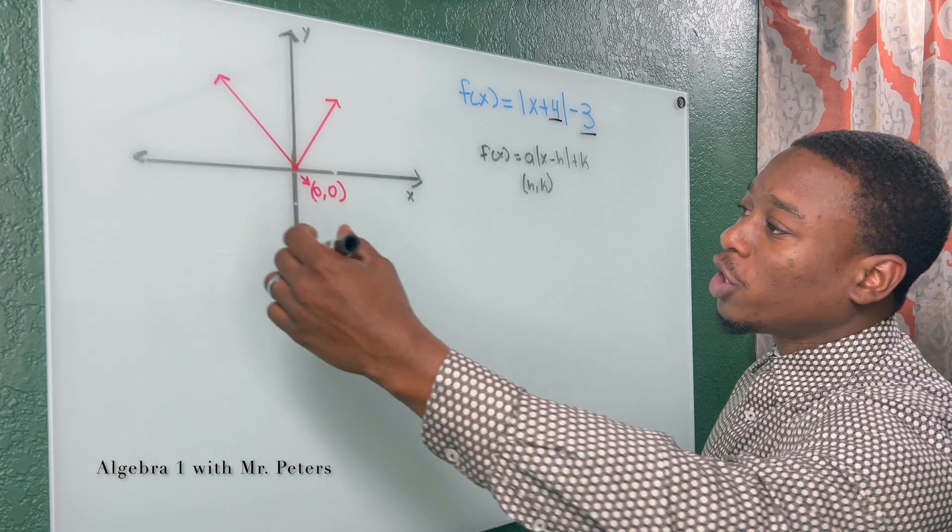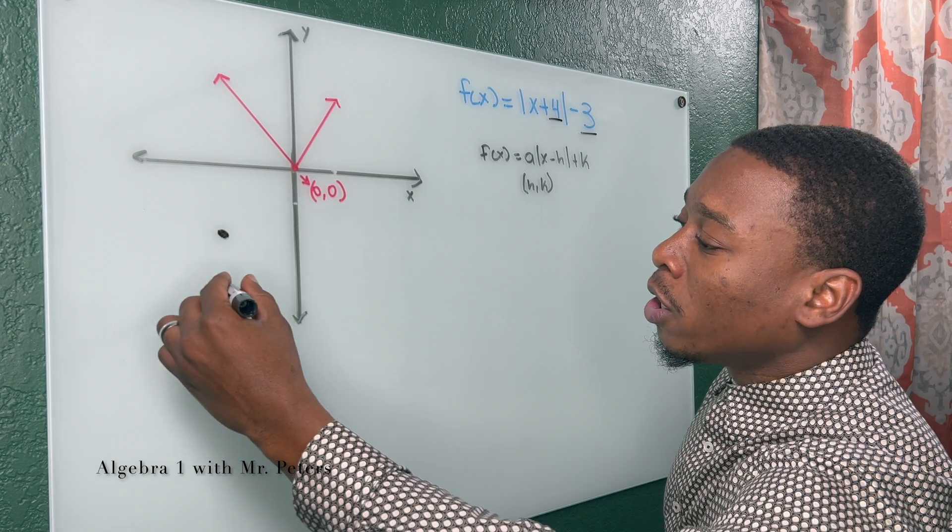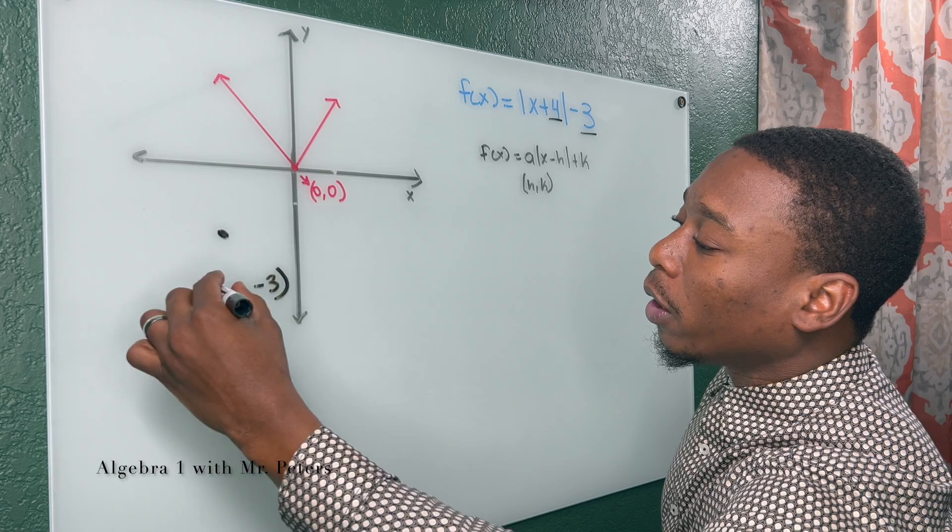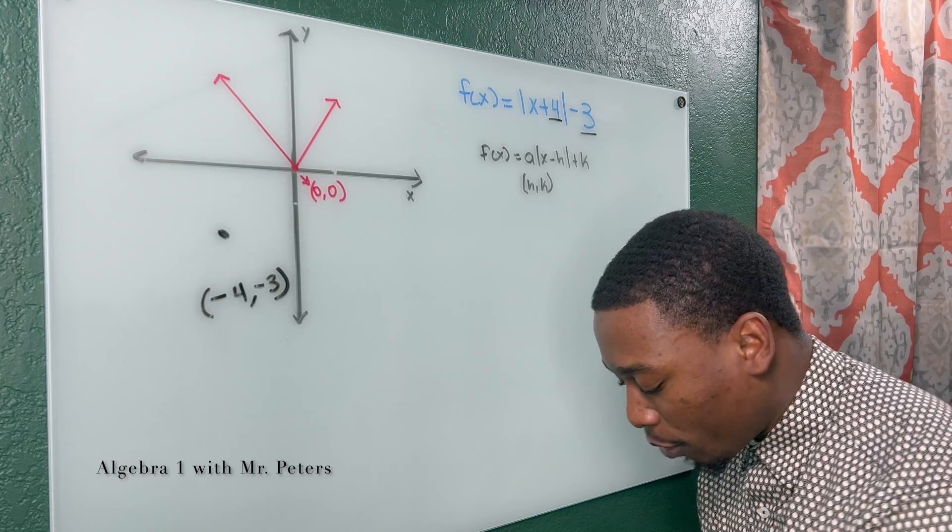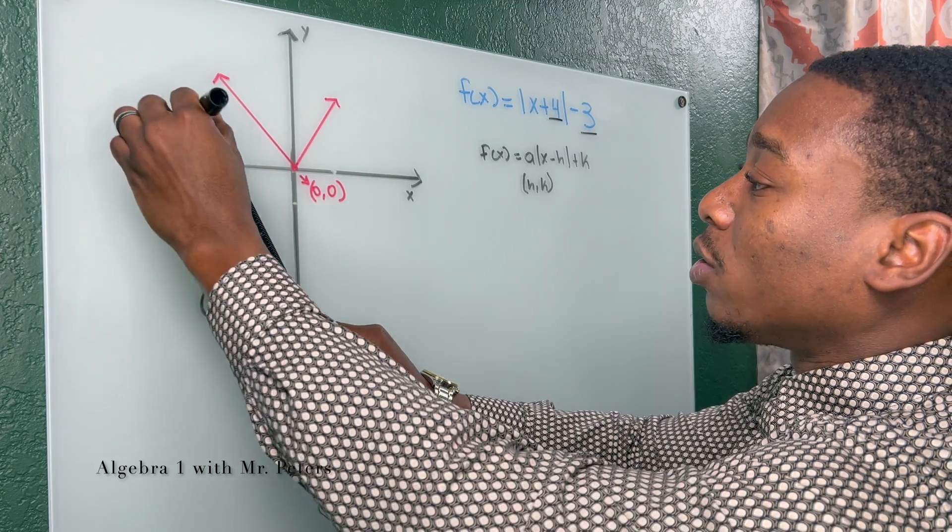So when I look at this, they're asking me to shift the graph to the left four and down three. So my new vertex will be at negative four and negative three. Let's grab the ruler and now draw those straight lines in. So we know our graph should look something like this.